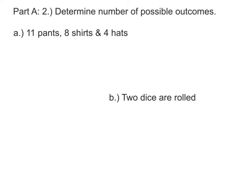For the outfit problem, where you have 11 pants, 8 shirts, and 4 hats, this is a good time to use the basic counting principle. To determine how many outfits there are, an outfit's going to be made up of pants, shirts, and maybe a hat.